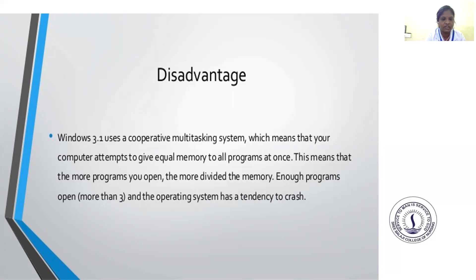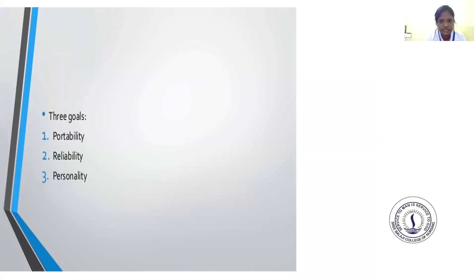A disadvantage of Windows 3.1 is that it uses a cooperative multitasking system, which means the computer attempts to give equal memory to all programs at once. The more programs you open, the more divided the memory becomes — with more than three programs open, the operating system has a tendency to crash. The three goals of the system are: portability, reliability, and personality.